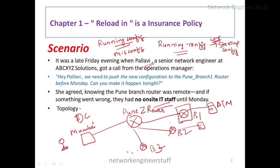Because of the misconfiguration, she loses connectivity to that branch router. This is a real world scenario that has happened to almost all network engineers at some point. The best thing she can do is wait until Monday. Someone will come on Monday, perform a power reboot, and the router will load from the startup config — not the running config — so she will regain access.